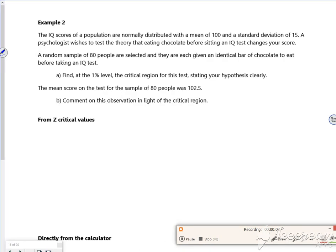So this is another example. We've got IQ scores with a mean of 100, standard deviation of 15. So x-bar is a normal of 100, 15 squared. We're testing a theory that it changes your score, so it's going to be two-tailed because it's vague.